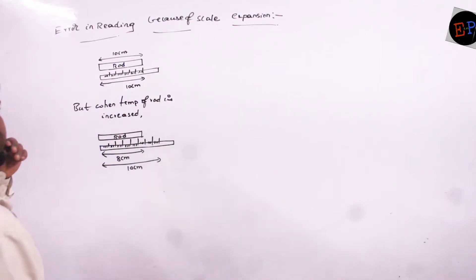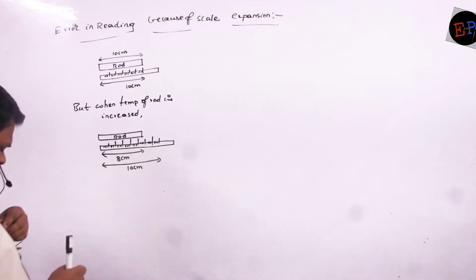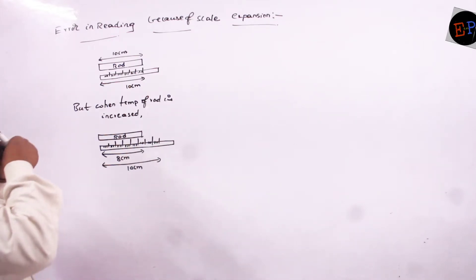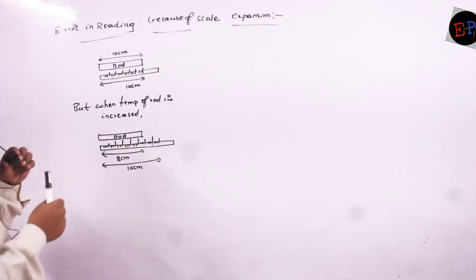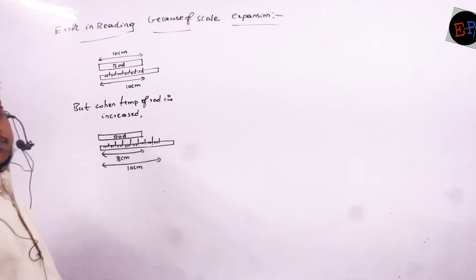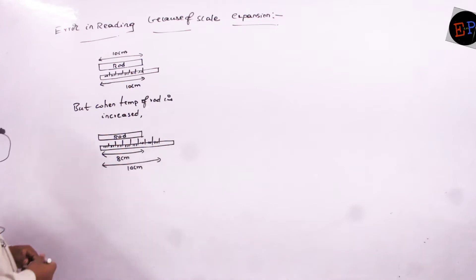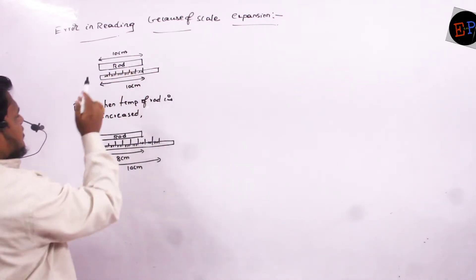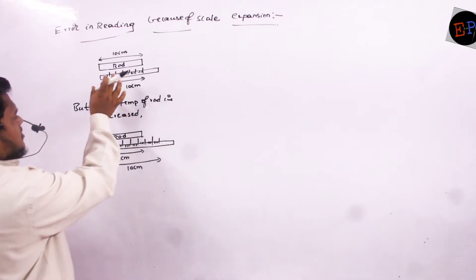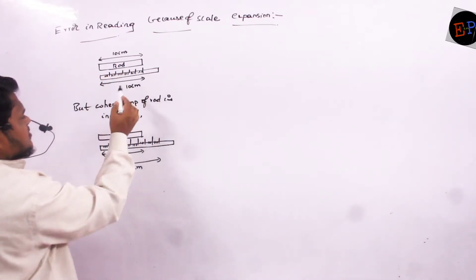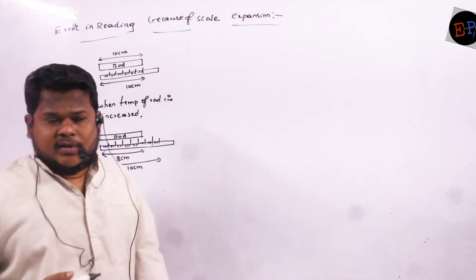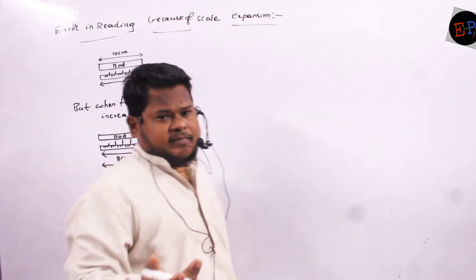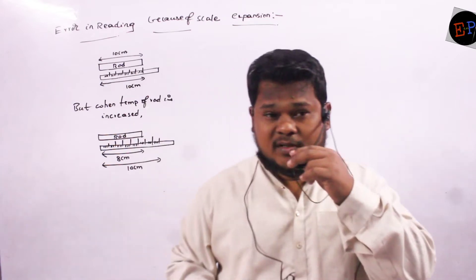The next concept we are studying is: you are reading incorrectly because of the enlargement or expansion of the scale. So this is a rod whose length is 10 cm, and I want to measure the length of this rod with the help of this scale. At normal temperature, the scale is showing the actual reading. The scale is designed for a particular temperature always.